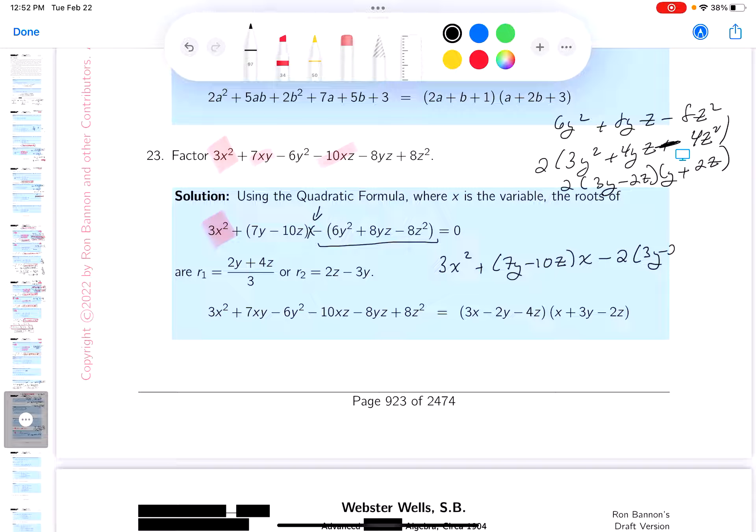All right, to factor this guy over here, I know it's going to be 3x and x. I'm hoping it's 3x and x, otherwise it's not going to be doable. Let's take a look at the next thing up, and I know I need this over here, and that's where some of the trouble lies.